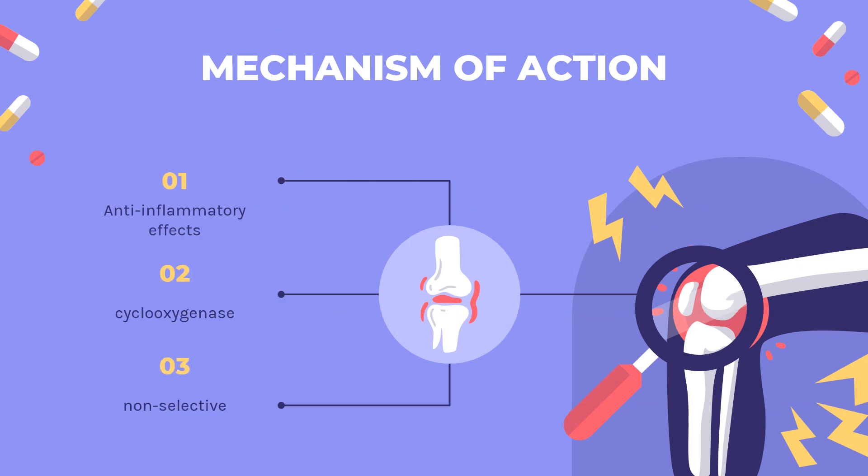Mechanism of action: The anti-inflammatory effects of oxaprozin are believed to be due to inhibition of cyclooxygenase in platelets, which leads to the blockage of prostaglandin synthesis. Antipyretic effects may be due to action on the hypothalamus, resulting in increased peripheral blood flow, vasodilation, and subsequent heat dissipation. Oxaprozin is a non-selective NSAID, with a cell assay system showing lower COX-2 selectivity, implying higher COX-1 selectivity.